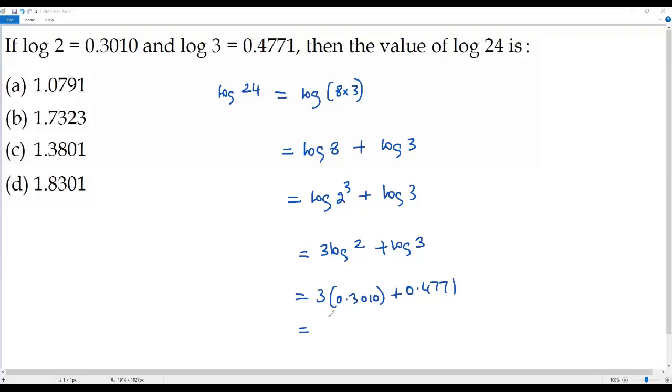When I multiply 3 times 0.3010, I will be getting 0.9030 plus 0.4771. When I add them, I will be getting 1.3801. So the evaluation of log 24 is 1.3801, which means the correct answer choice for this question is option C.